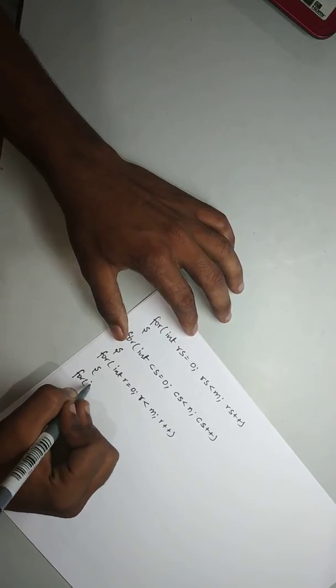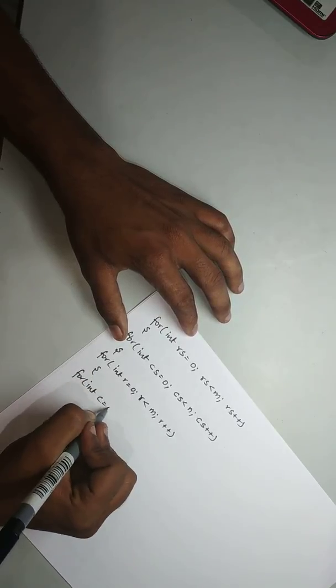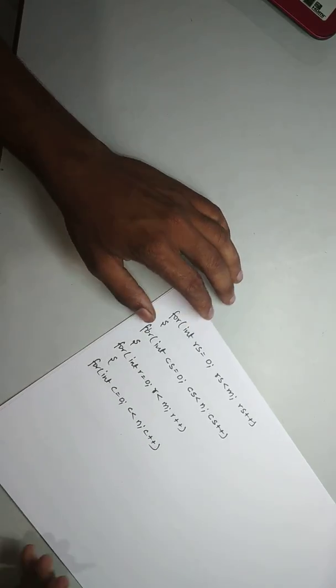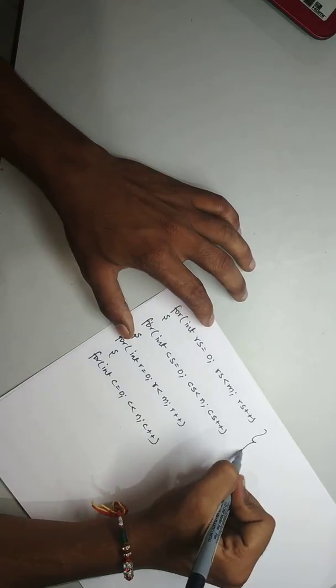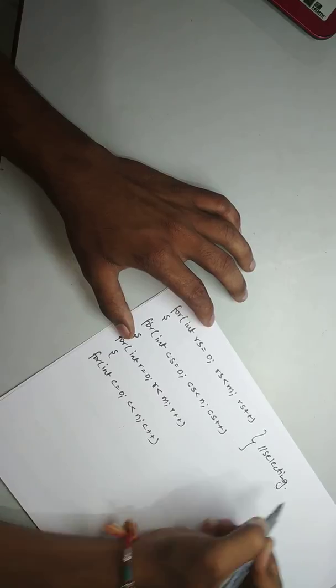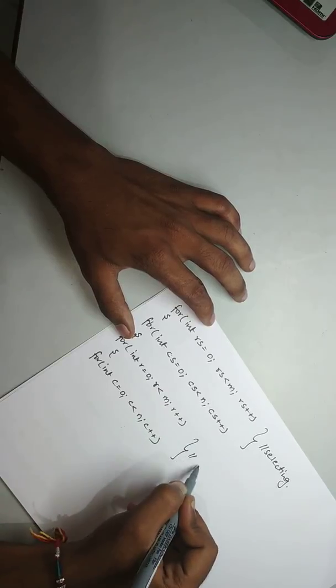Then for int rs is equal to r, less than m, rs will be plus plus. Then for int cs is equal to 0, less than n and cs will be plus plus. Here these particular two loops are for selecting, and these are for comparison.